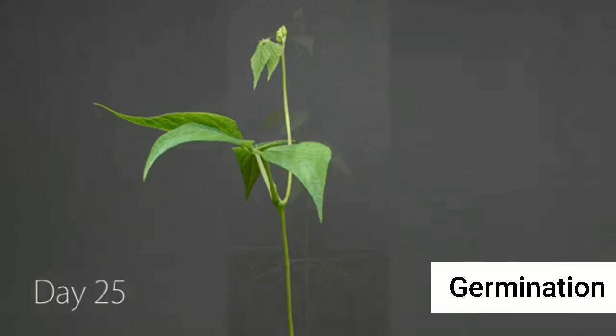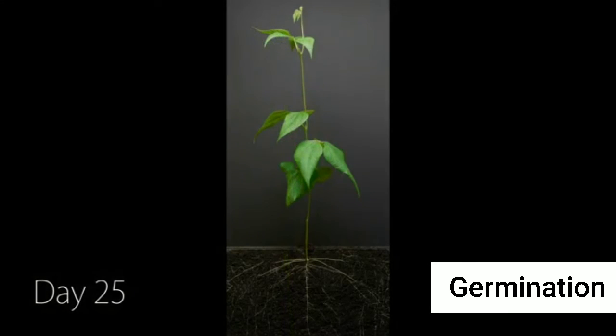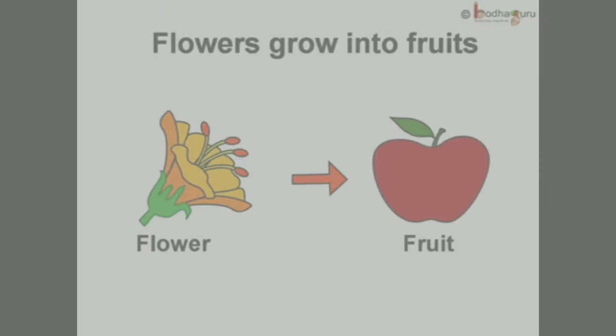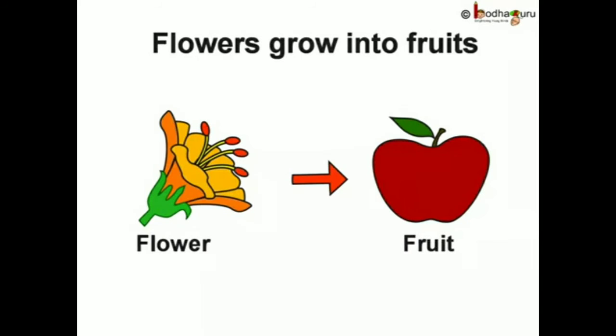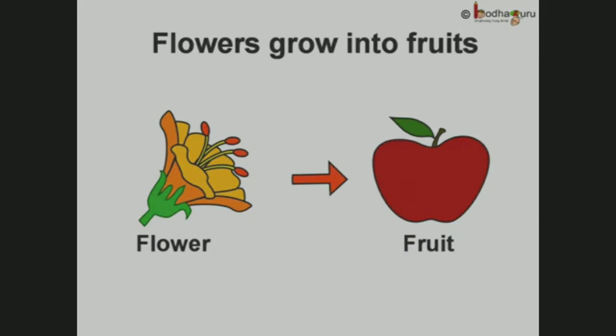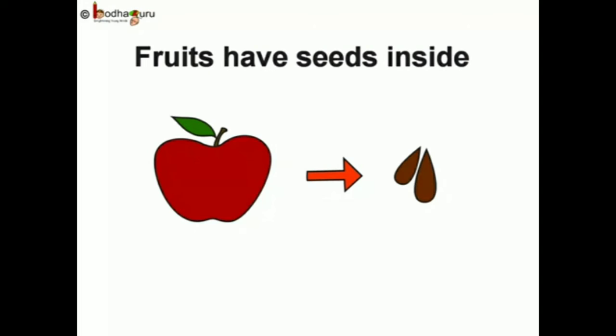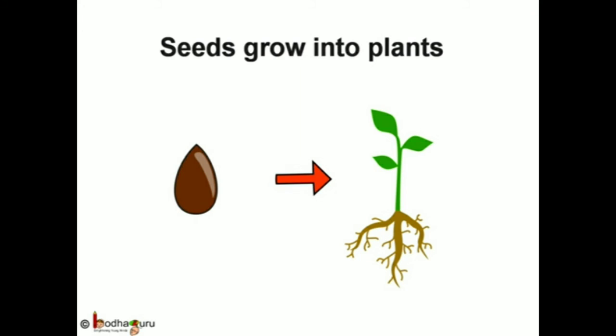After some time, when the plant gets fully mature, it bears flowers. These flowers help to produce fruits, and fruits have seeds in them. With the help of these seeds, we can grow more plants. This was all about germination.